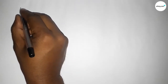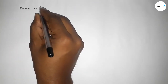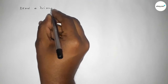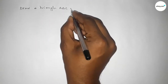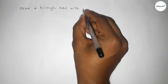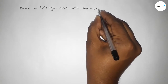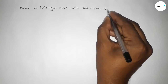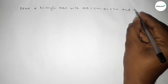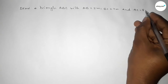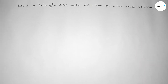Hi everyone, welcome to SI Share Classes. Today in this video we have to draw a triangle ABC with AB equal to 5 centimeters, BC equal to 4 centimeters, and AC equal to 8 centimeters. So let's start the video.